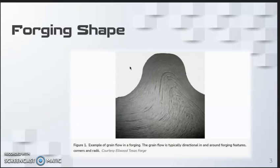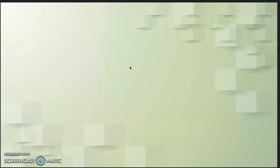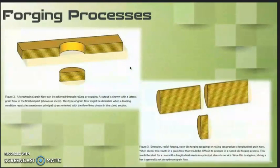Next is forging processes. Many parts can be produced by more than one type of forging process. In Figures 2 through 4, an illustration of how different processes produce forgings with significantly different grain flow is shown. This variation is possible despite identical geometry.